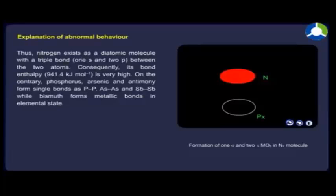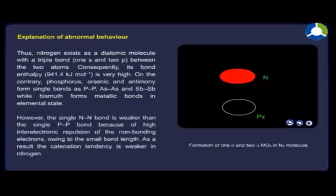However, the single nitrogen-nitrogen bond is weaker than the single phosphorus-phosphorus bond because of high inter-electronic repulsion of the non-bonding electrons owing to its small bond length. As a result, the catenation tendency is weaker in nitrogen.